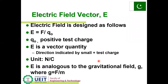The electric field vector E is defined as E equals F over Q₀, where Q₀ is the positive test charge. E is a vector quantity. Its direction is indicated by the small positive charge, and its unit is N/C. E is analogous to the gravitational field G, where G equals F over M.